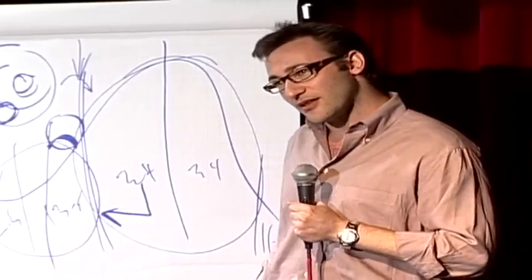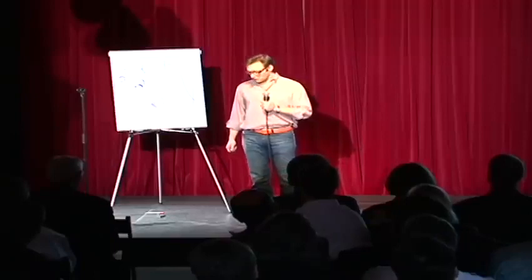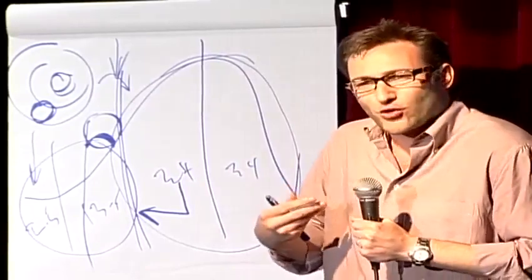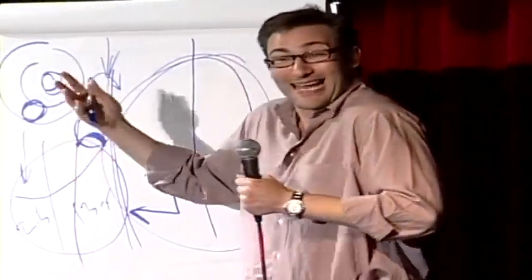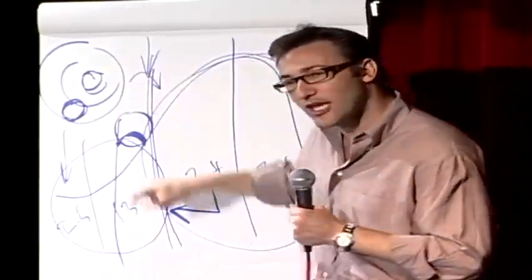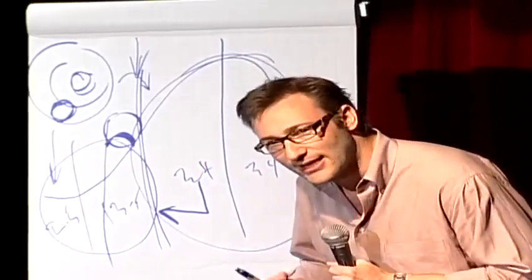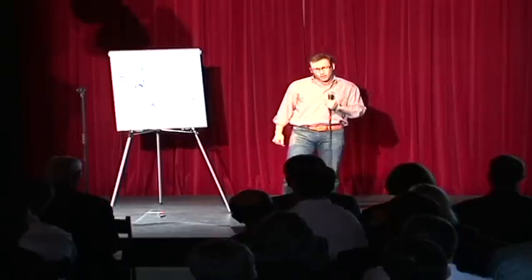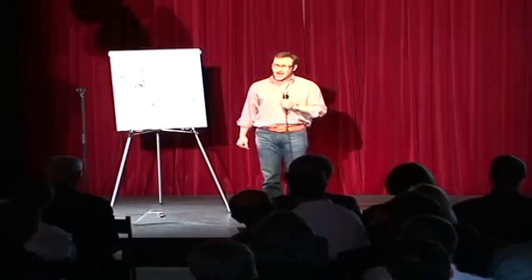Now, let me give you a successful example of the law of diffusion of innovation. In the summer of 1963, 250,000 people showed up on the mall in Washington to hear Dr. King speak. They sent out no invitations, and there was no website to check the date. How do you do that? Well, Dr. King wasn't the only man in America who was a great orator. He wasn't the only man in America who suffered in a pre-civil rights America. In fact, some of his ideas were bad. But he had a gift. He didn't go around telling people what needed to change in America. He went around and told people what he believed. I believe, I believe, I believe, he told people. And people who believed what he believed took his cause and they made it their own, and they told people. And some of those people created structures to get the word out to even more people. And lo and behold, 250,000 people showed up on the right day, on the right time, to hear him speak. How many of them showed up for him? Zero.